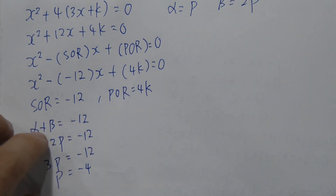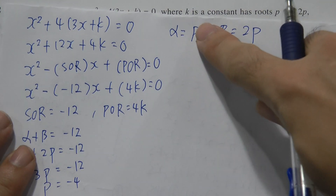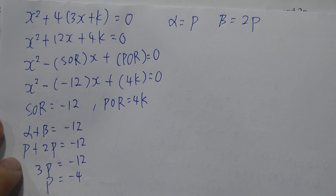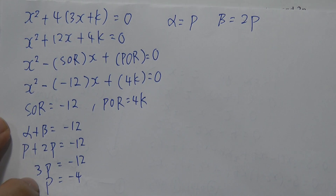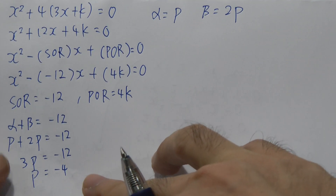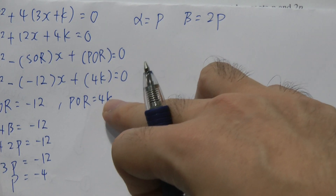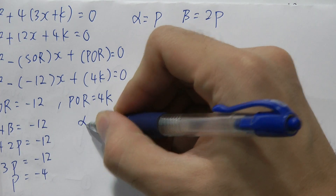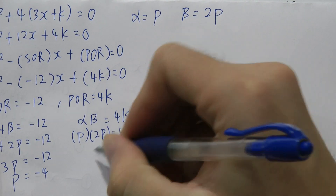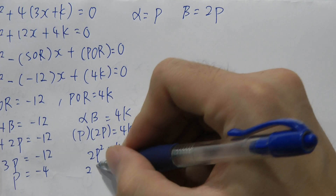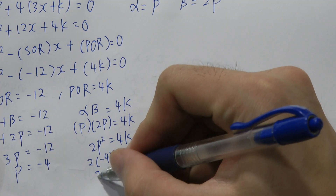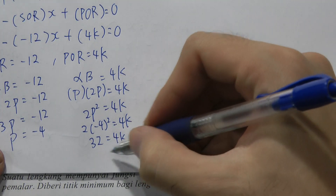You can assume alpha = 2p and beta = p — it doesn't matter, because added together you get 3p and solve to get p = -4. Part A asks for both p and k. Using the product of roots: alpha × beta = 4k, so p × 2p = 2p² = 4k. Substituting p = -4: 2 × 16 = 32 = 4k, therefore k = 8.